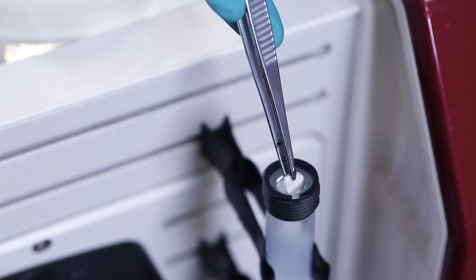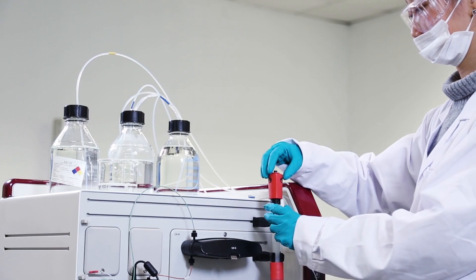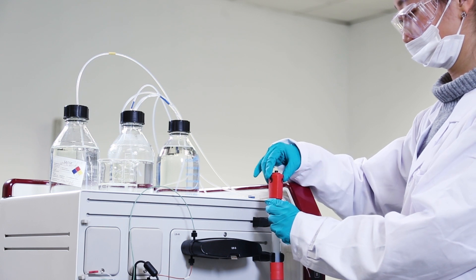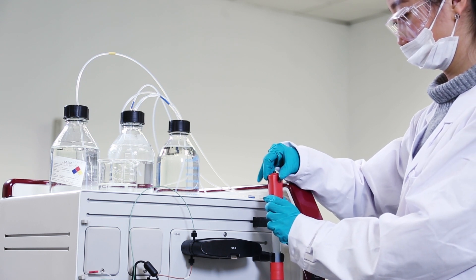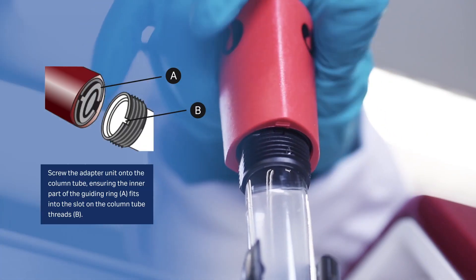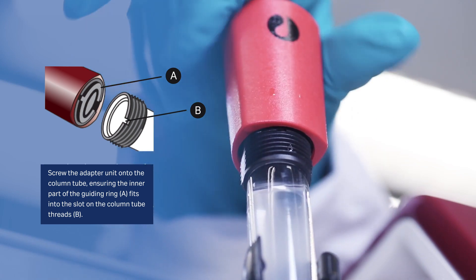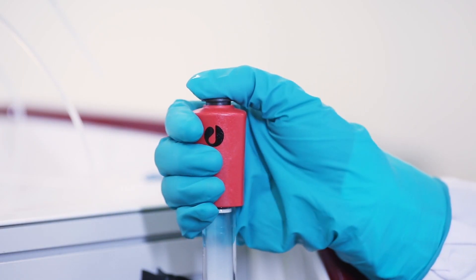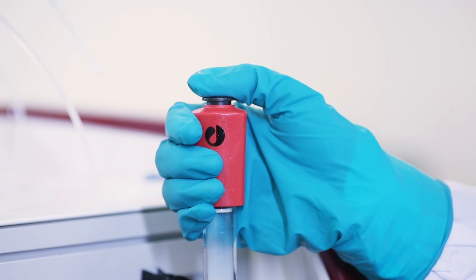Add packing solution if the slurry does not reach the top. Wet the top filter in 20% ethanol and place it on the top of the column. Now take the top adapter, making sure the O-ring is intact and insert it into the reservoir. Ensure that the inner part of the guide ring fits into the slot on the tube threads. Add the locking ring to hold the adapter in place.